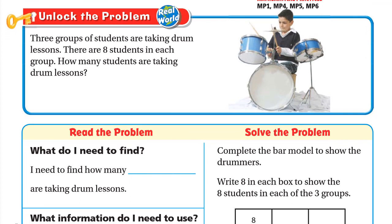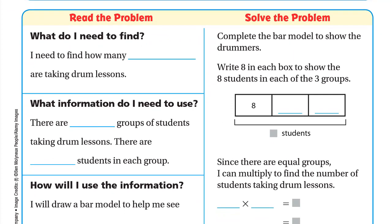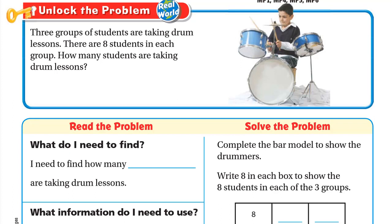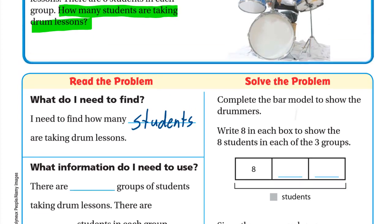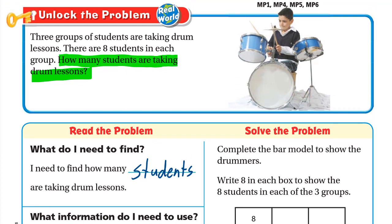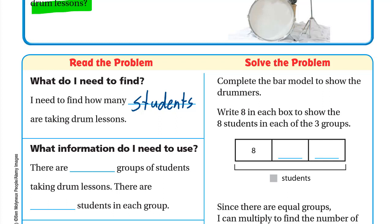Three groups of students are taking drum lessons. There are 80 students in each group. How many students are taking drum lessons? What do I need to find? I need to find how many students are taking drum lessons. What information do I need to use? There are three groups of students taking drum lessons, and there are 80 students in each group.